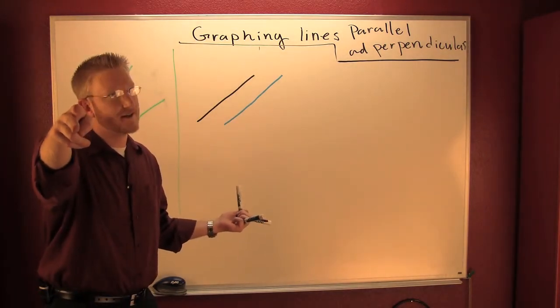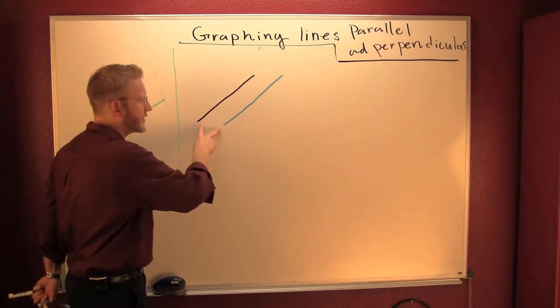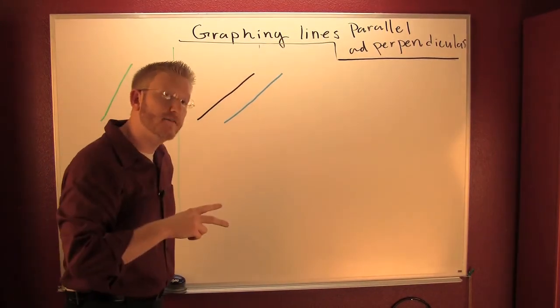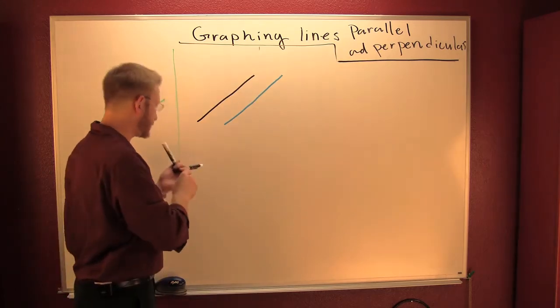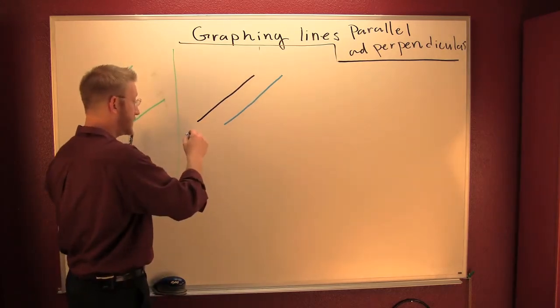Now, take a look at this. Go a little bit further. These lines are never going to intersect. Two lines that are never going to intersect are parallel. And parallel lines have the same slope.